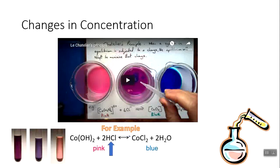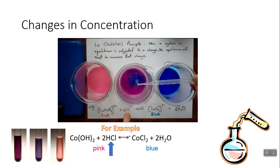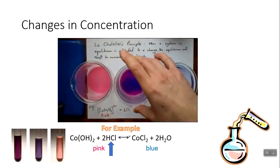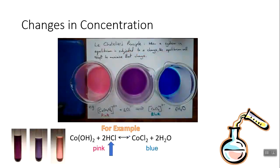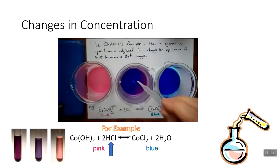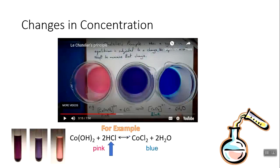Let's look at the video to see if our prediction is true. As we add hydrochloric acid, the solution goes blue — first a darker purple, then a more intense blue as we keep adding. Eventually we reach a complete blue color. Our prediction was correct: adding more hydrochloric acid shifts equilibrium to the right, creating more product — that's why it turned blue.